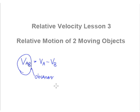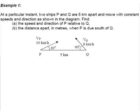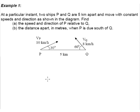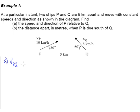Without further ado, let's jump into the first example. Example 1: At a particular instance, two ships P and Q are 5 kilometers apart. P is moving at an angle of 30 degrees at a speed of 10 kilometers per hour, while Q is moving at a speed of 8 kilometers per hour at an angle of 60 degrees. The job here is to find the velocity of P relative to Q. The velocity of P relative to Q is given by this formula: Vp minus Vq. However, we can't simply take 10 minus 8 because Vp and Vq are no longer parallel.